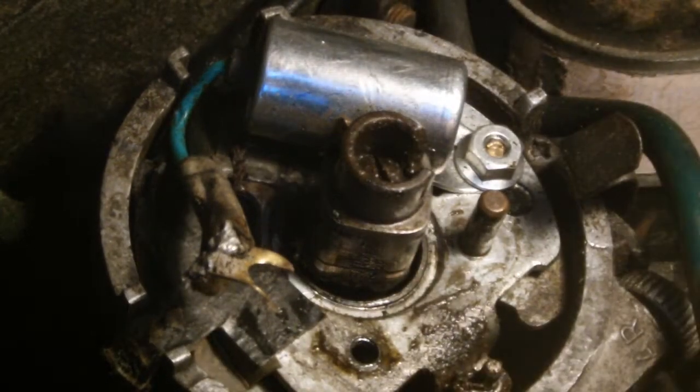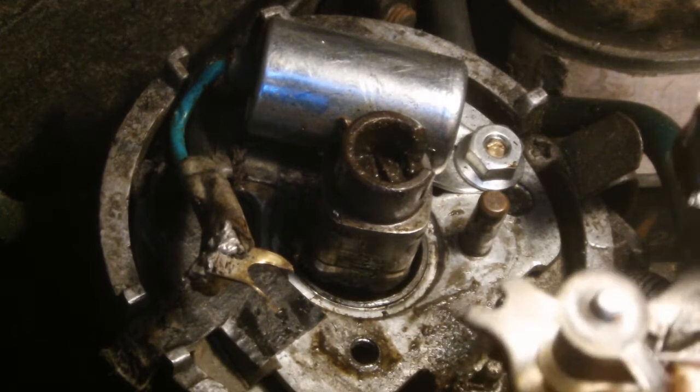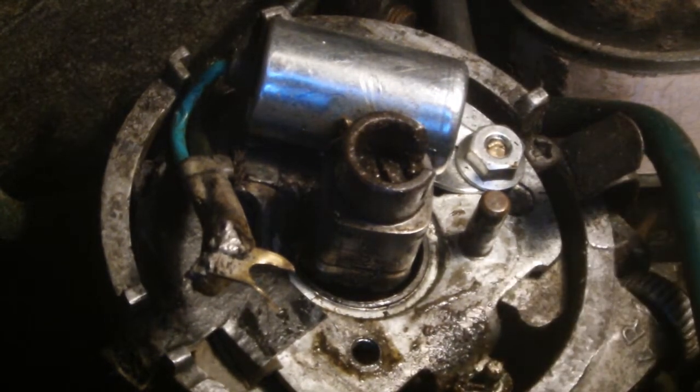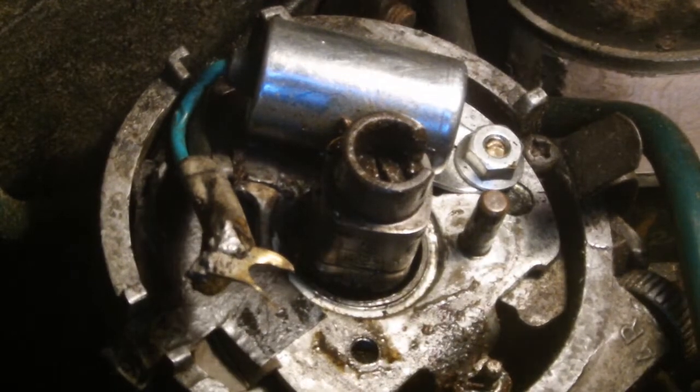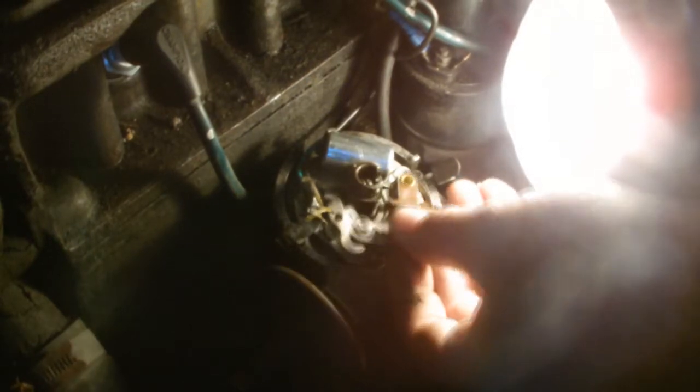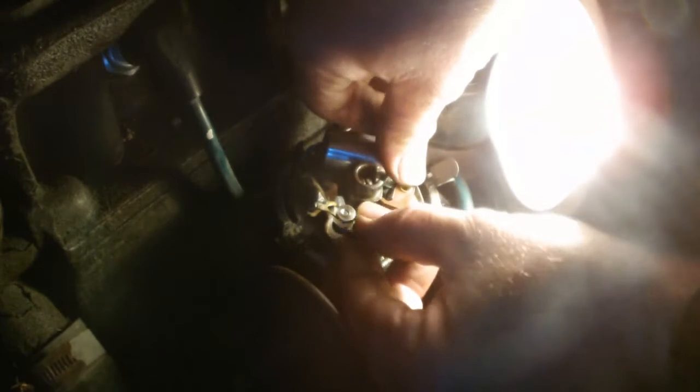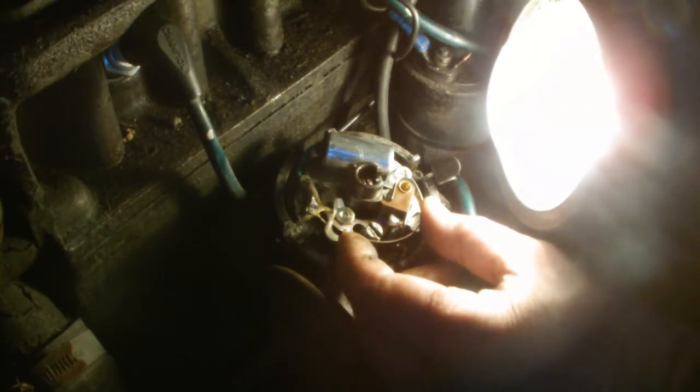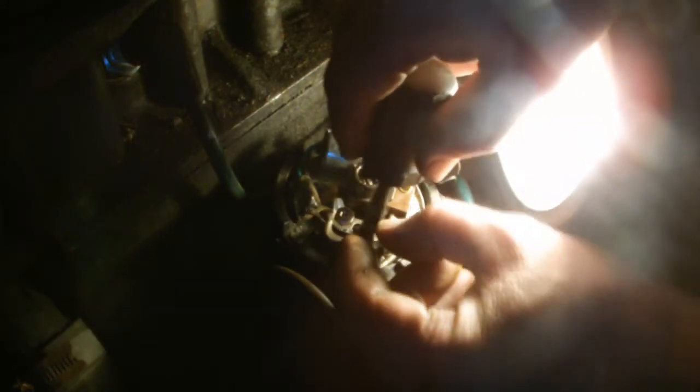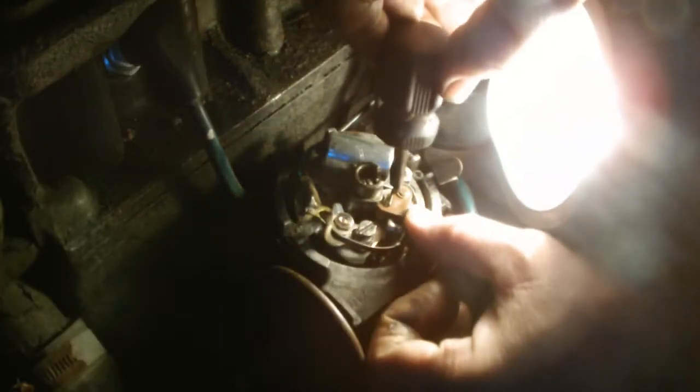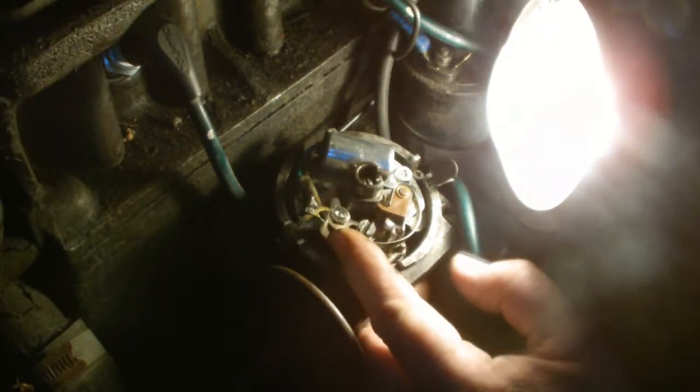So our next step we'll replace these contacts and set the new ones up. Now I'm going to fold the new set here and pop them in like that. A little screw here. Like that. Make sure you don't lose the washer. Push them down. And just set the gap there about 16.